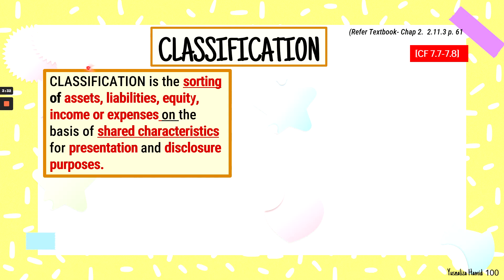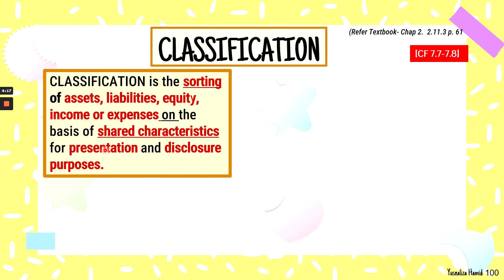Before we can disclose or present the financial statement, classification itself is important. Classification is the sorting of assets, liabilities, equity, income, and expenses on shared characteristics for presentation and disclosure purposes. For example, property, plant, and equipment as presented in the statement of financial position groups assets like motor vehicles, land, buildings, and equipment because they share the same characteristics.